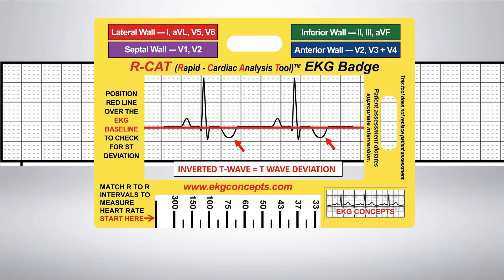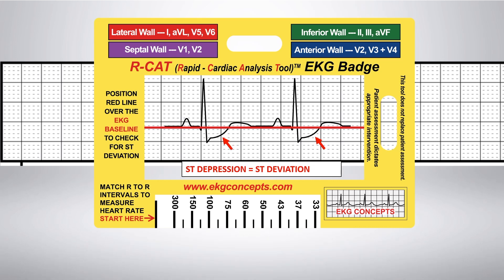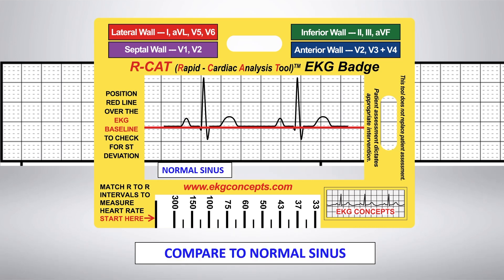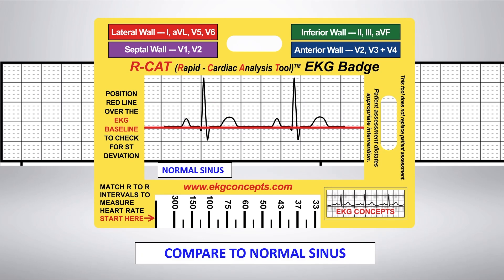Here you see an inverted T wave or T wave deviation — compare this to normal sinus rhythm. In this example, you have ST depression or ST deviation below the baseline — compare this to normal sinus rhythm. Here you have ST elevation or ST deviation above the baseline — compare this to normal sinus rhythm.